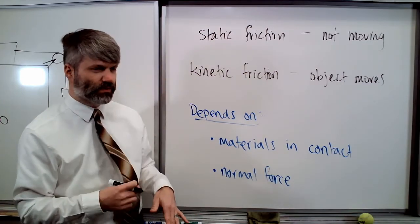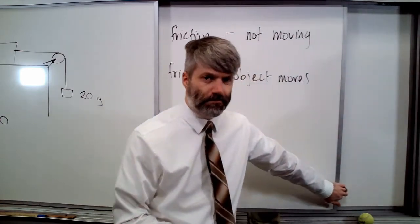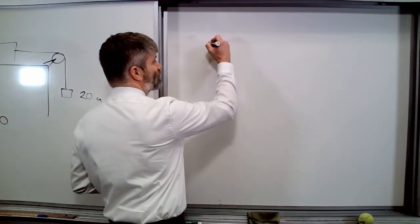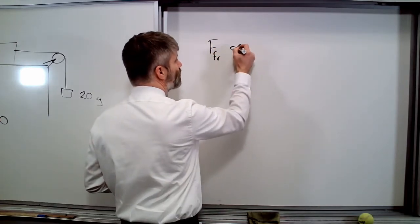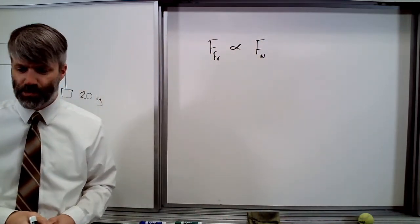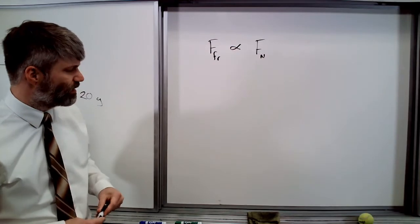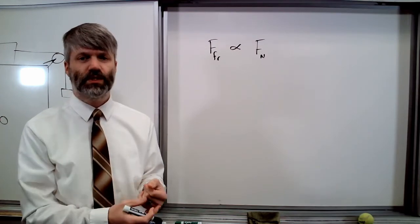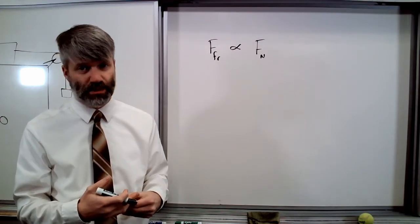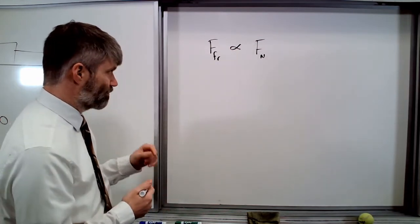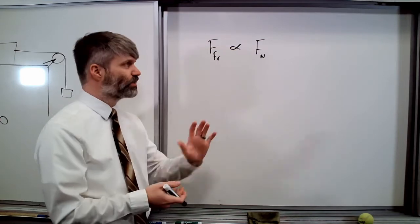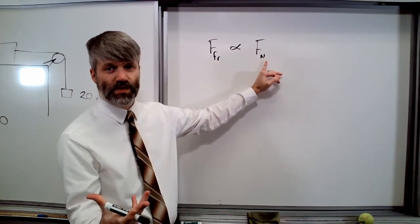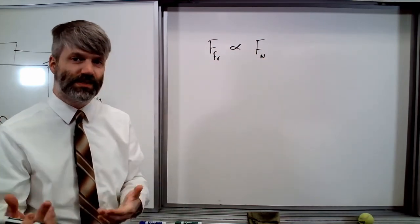Now, we've already seen how the materials in contact kind of work. Let's talk about the normal force. There is a direct proportion relationship between the force of friction and the normal force. There's no real concept behind it. We can't derive this relationship or anything. This really had to be done by experiment. So, generally, when we're setting up an equation, if we know it's a direct proportion, then we know that this is equal to this multiplied by some other value. In this case, it's a constant value.